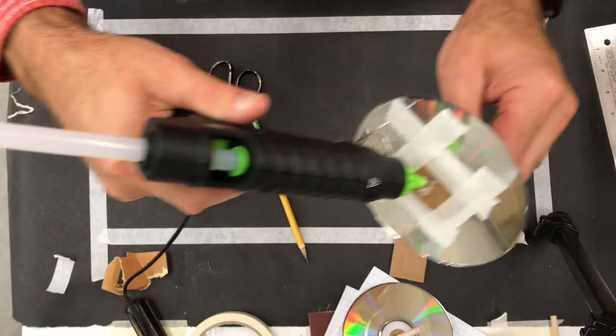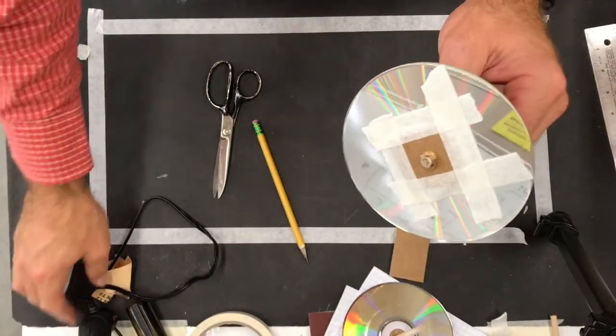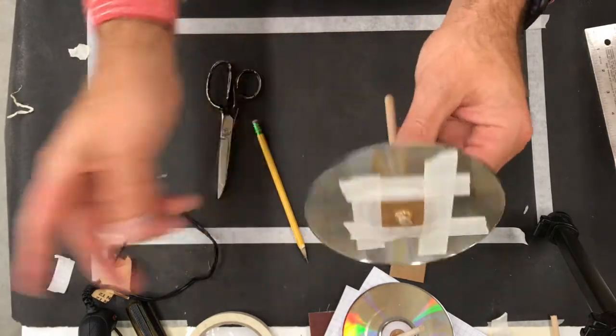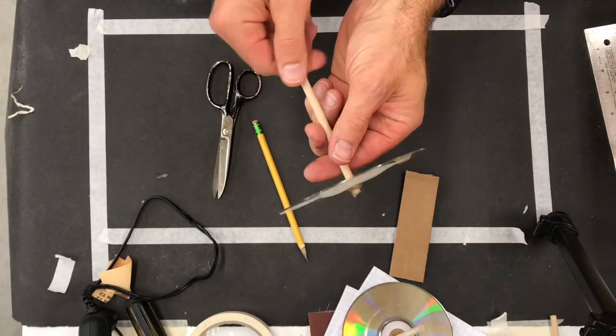I guess I should do this on the camera. There we go. Spinning it gently and adding a little bit of glue. And now the most difficult part is getting this straight so that when it spins, there's no wobble.